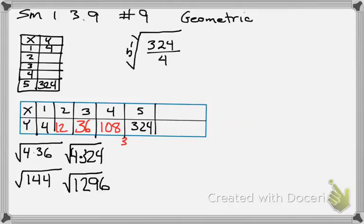So what is 324 divided by 4? 81. So what is the fourth root of 81?